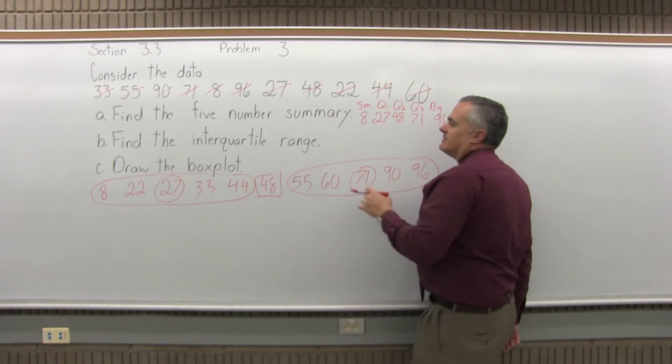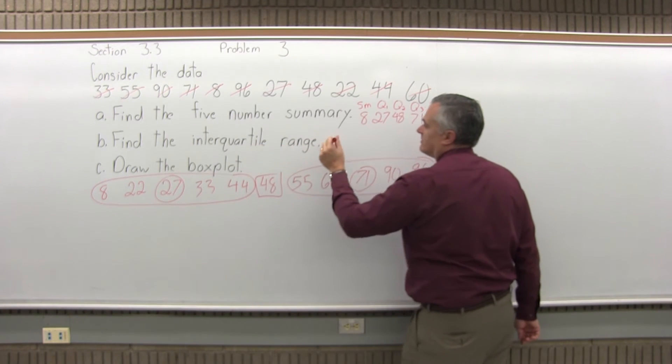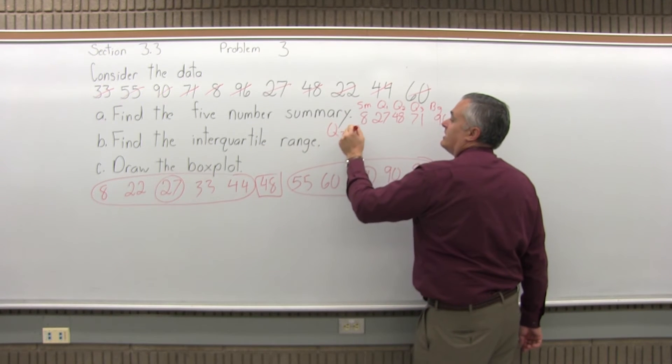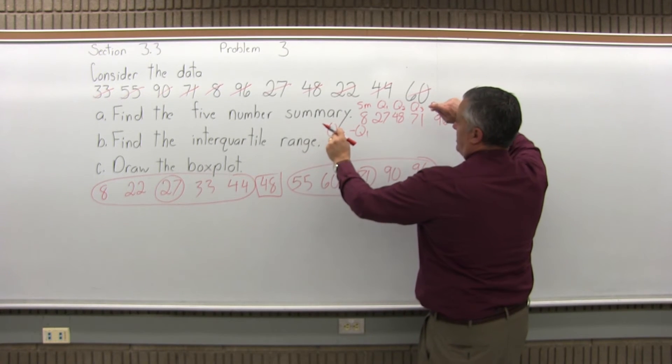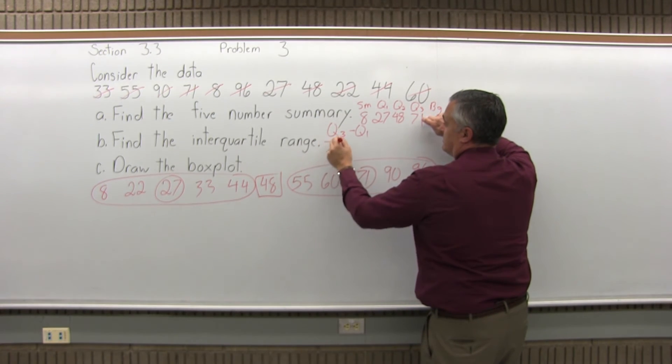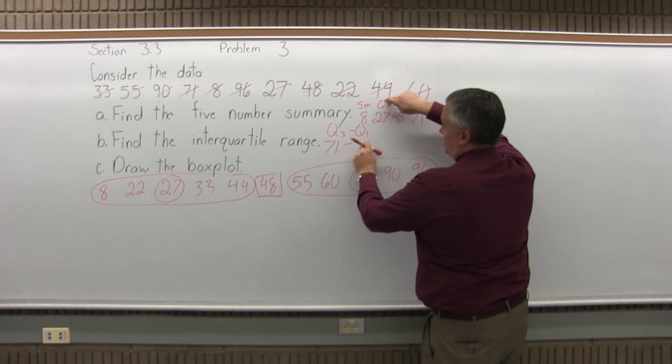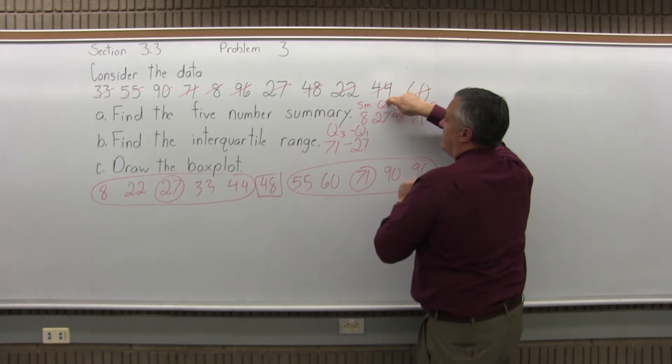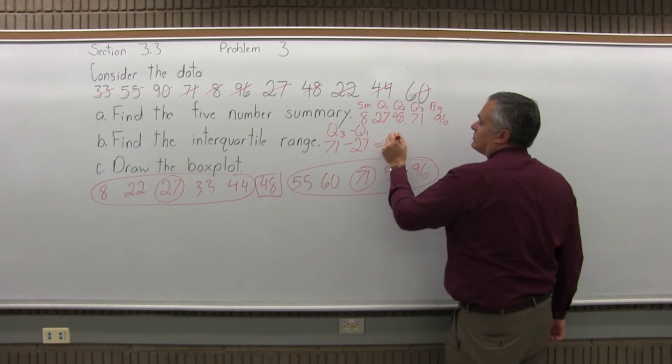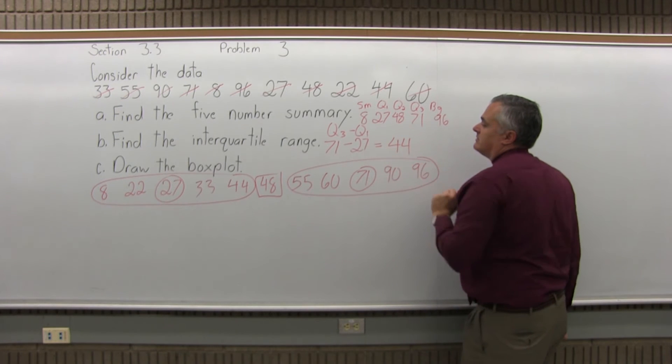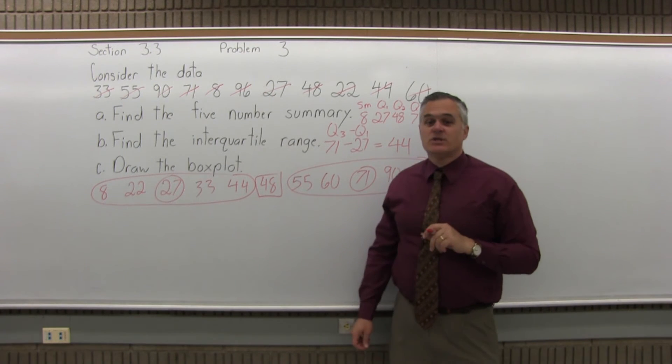Next, the interquartile range. That's simply Q3 minus Q1. For this problem, Q3 is 71 minus Q1, which is 27. And if I subtract that, it comes out to 44. So the interquartile range is 44.